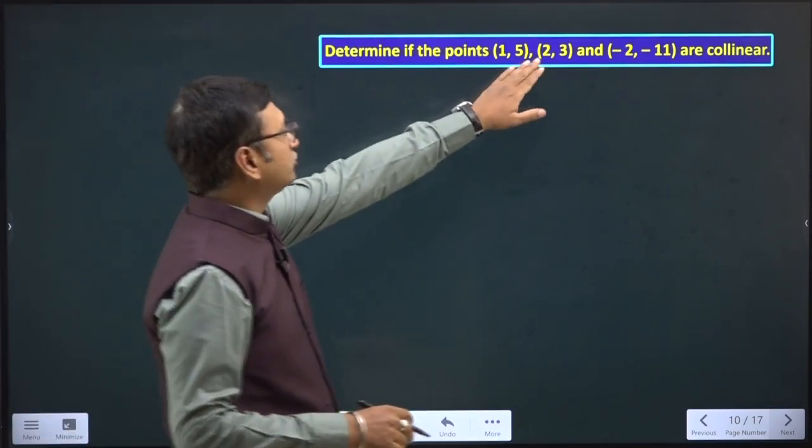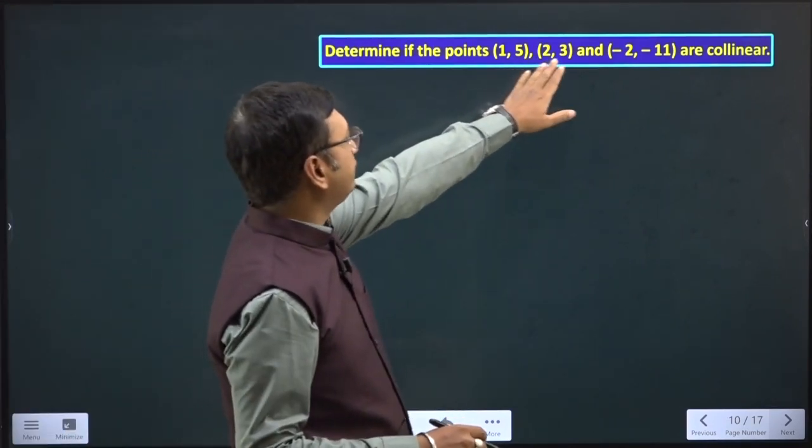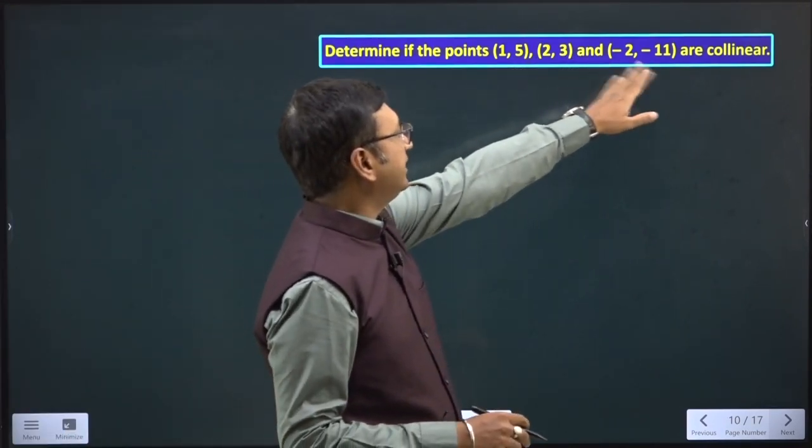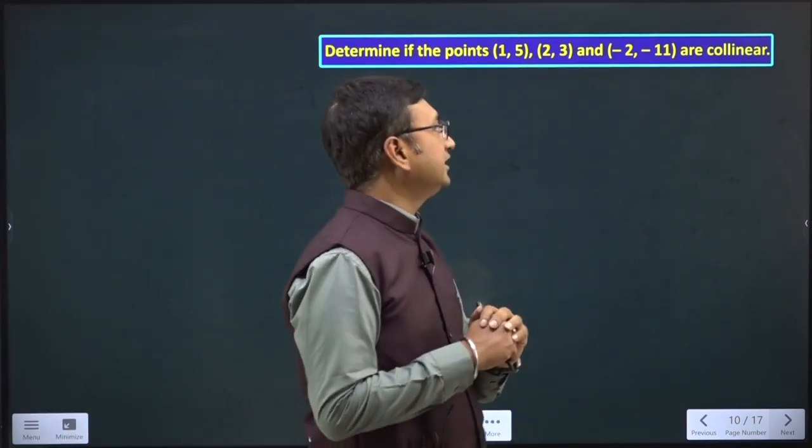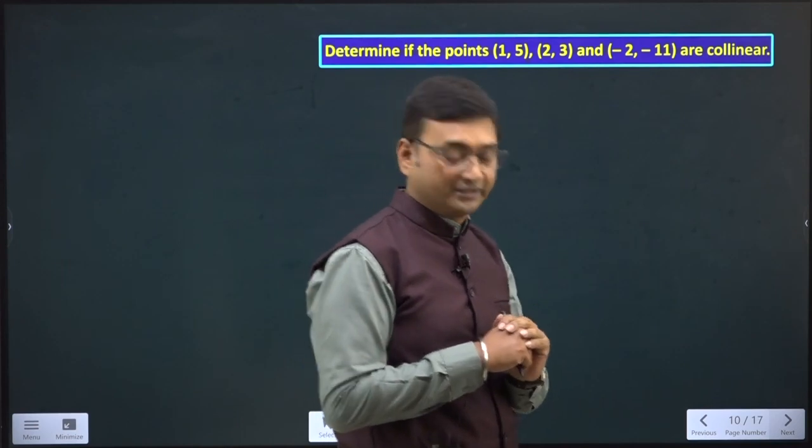Determine whether the points (1, 5), (2, 3) and (-2, -11) are collinear.